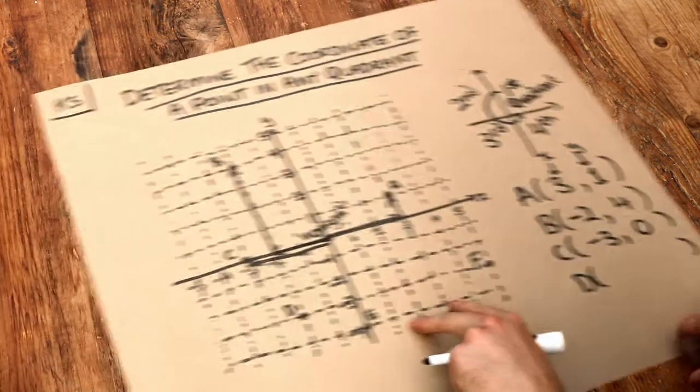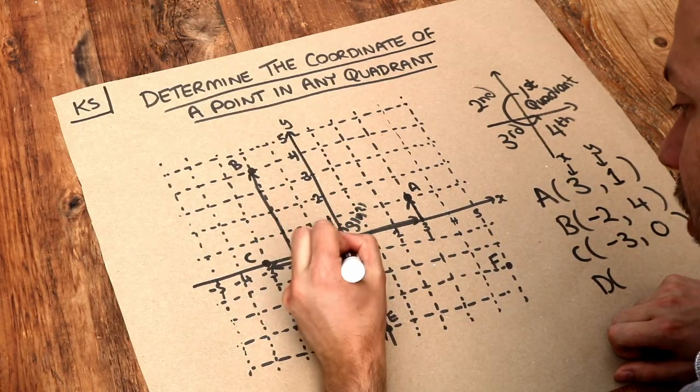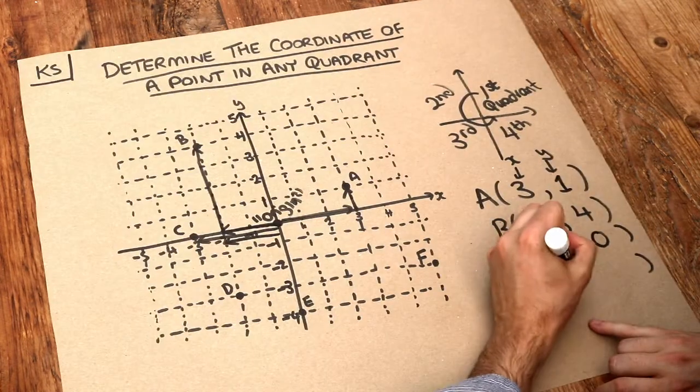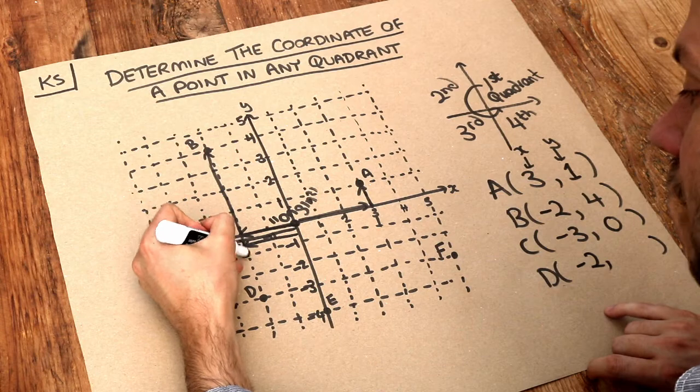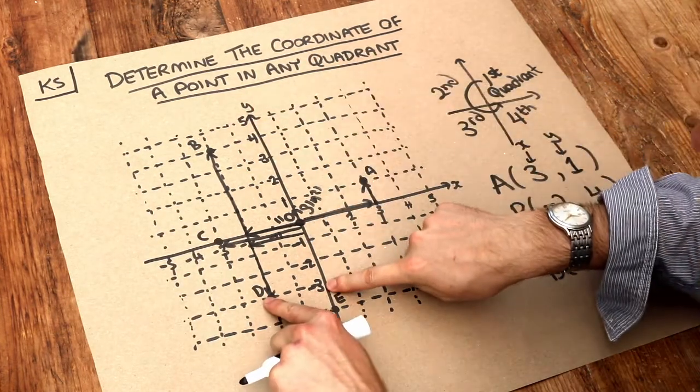What about D? Well, in the x-direction, starting from the origin, we have to go two to the left to get to minus two, and then we have to go down from there to a y-value of minus three.